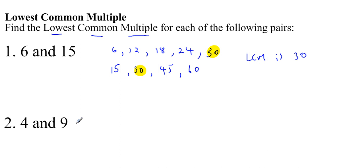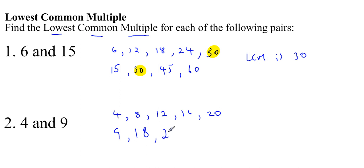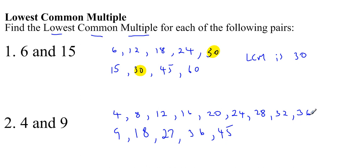You might want to have a go at this one and pause the video before I go through it. So I list the multiples of 4: 4, 8, 12, 16, 20. And then I list the multiples of 9: 9, 18, 27, 36, 45. I haven't found anything that's common, so I'm going to go back to the multiples of 4 and list some more: 24, 28, 32, 36. And there I've found a multiple which is common to both lists — 36. So the LCM of 4 and 9 is 36.